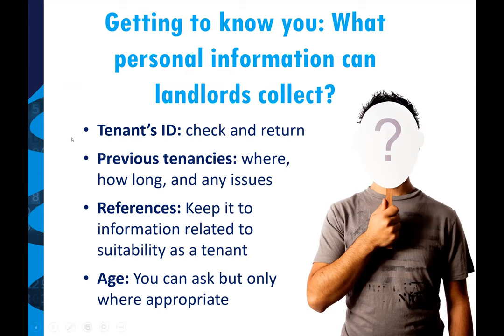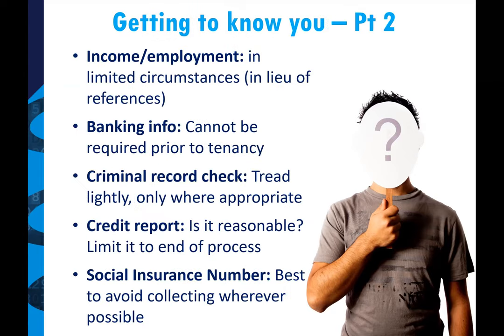You can ask for age, but only where appropriate — for example, if it's an over-55 building. For income and employment, you can do it in limited circumstances. If you don't have adequate references, you can definitely try to seek more information to satisfy yourself that this individual can pay the rent. Banking info cannot be required, but obviously if you're going to be automatically taking money out every month, you can get that information once they're a tenant. For criminal record checks, tread very lightly — only where appropriate. Our guidelines talk about a daycare next to where you're renting as a unique circumstance where you might require some criminal history information, but generally this would not be considered objectively reasonable under PIPA.